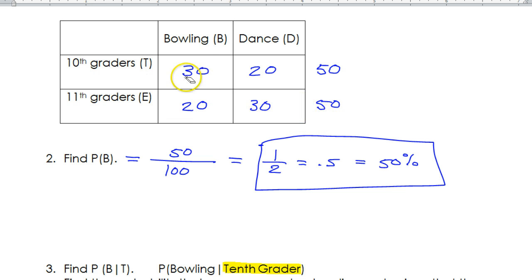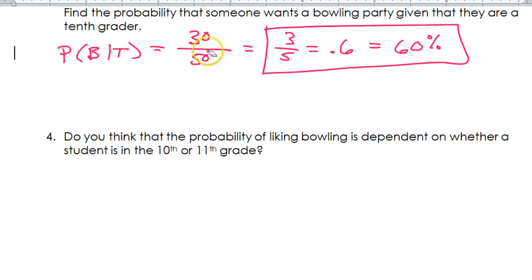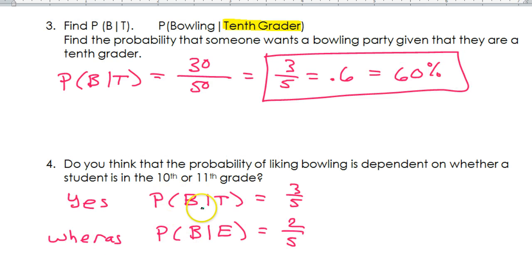So clearly, there will be a higher probability if you're picking from among 10th graders, and a lower probability for people who wanted bowling among 11th graders. So yes. So I'm going to write it out formally, using our notation, saying yes, it matters. It is dependent.